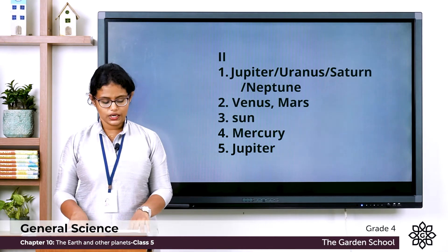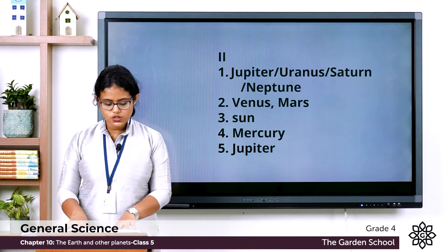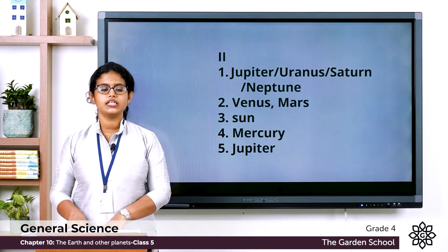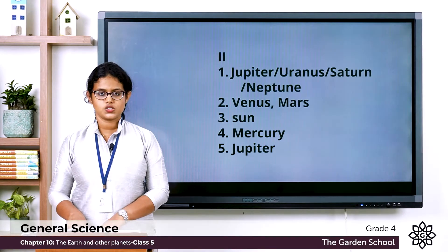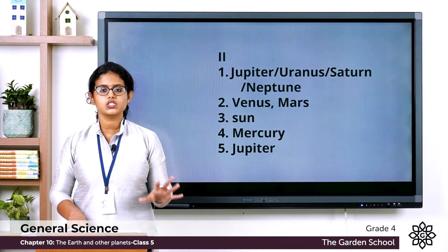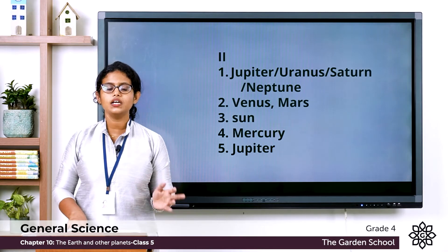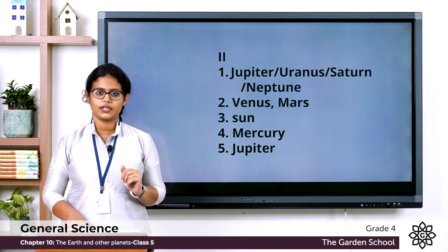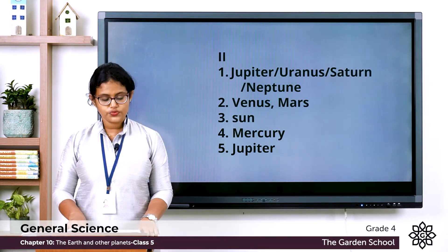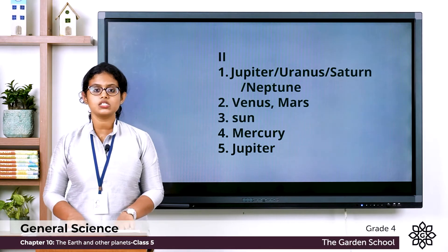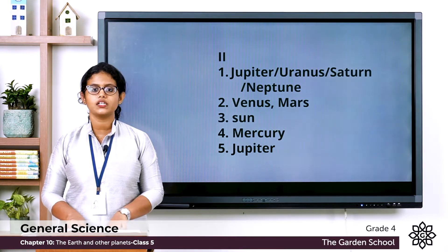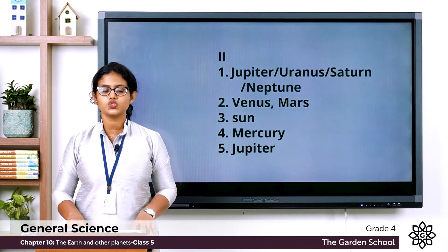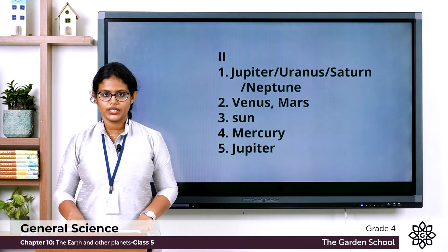The third one: All planets of the solar system revolve around the sun in a definite path, so the answer is sun. Fourth one: Dash is the closest planet to the sun — it is Mercury.